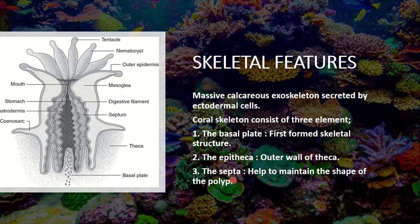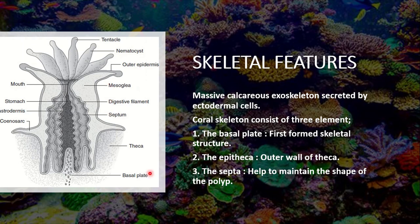The third element is the septa. Septa is the plural of the word septum. Septum consists of radiating vertical lines present in the body of the coral. These help to maintain the shape of the coral polyp. In addition, there are many other elements in the structure, but these three — basal plate, epitheca, and septa — are the most important elements of the whole skeleton of corals.